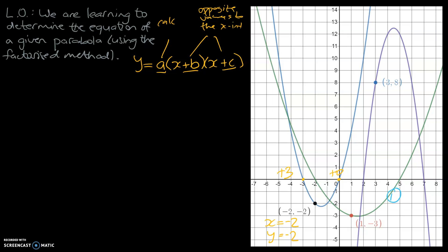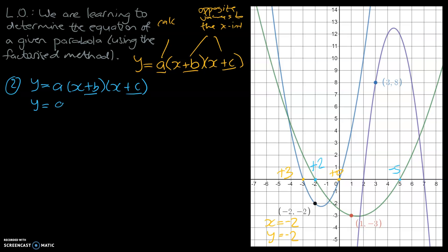We're now going to look at the green graph — that's our second equation. First step, as always, write down the formula. We can figure out the b and c values just by looking at it. The x-intercept is at negative 2, so the opposite is positive 2. The other intercept is at 5, and the opposite of that is minus 5. So our starting equation is y equals a times (x plus 2)(x minus 5). It doesn't matter which way around the brackets are — you'll still get the correct answer.